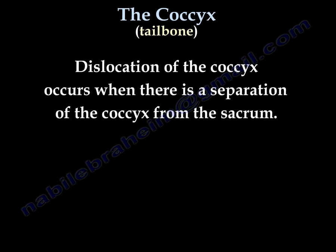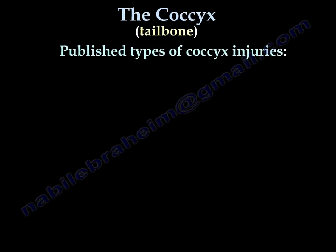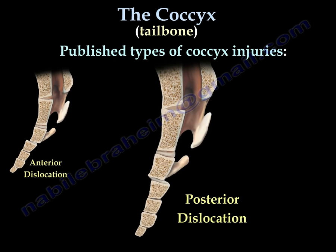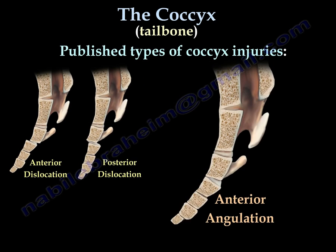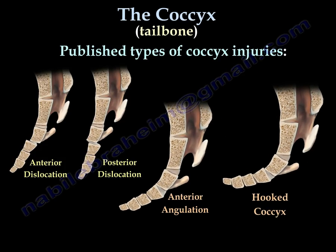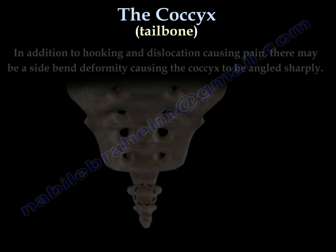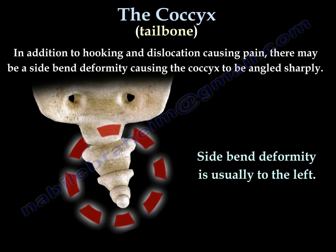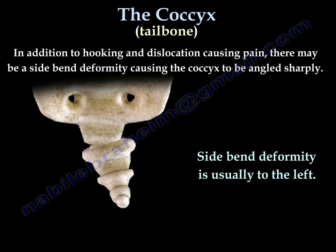Dislocation of the coccyx occurs when there is a separation of the coccyx from the sacrum. The published types of coccyx injuries include: anterior dislocation, posterior dislocation, anterior angulation, and hooked coccyx — which many people think is a major cause of tailbone pain. The side-bend deformity of the coccyx is another type that causes coccyx pain.